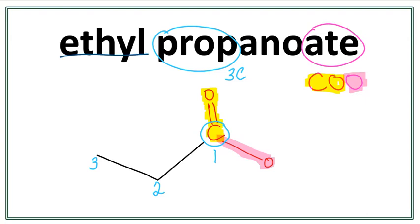Let's work on the side chain now. The side chain always attaches with the oxygen in the COO group, just right here. And we have ethyl, so let's draw ethyl with this oxygen right here.